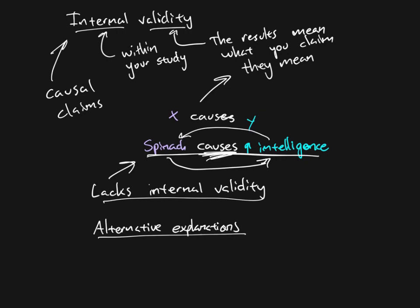That is where all the threats to internal validity come from: alternative explanations. We will look at a number of these so you know how they can be prevented.